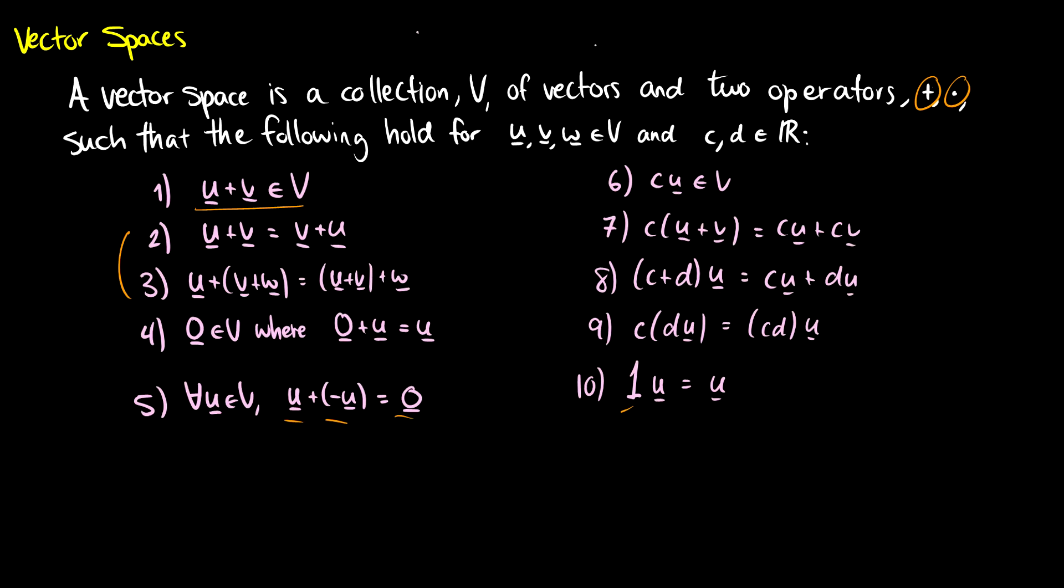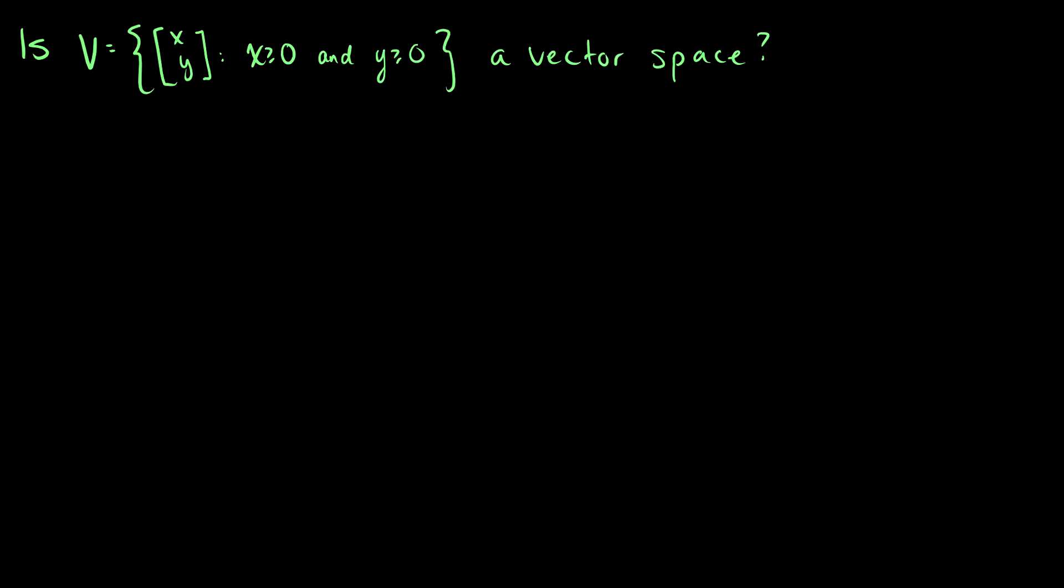So for instance, we know the real numbers. This is a good vector space. However, here's a question. Is V, the set of all vectors x, y, where x is greater than zero, and y is greater than zero, a vector space?